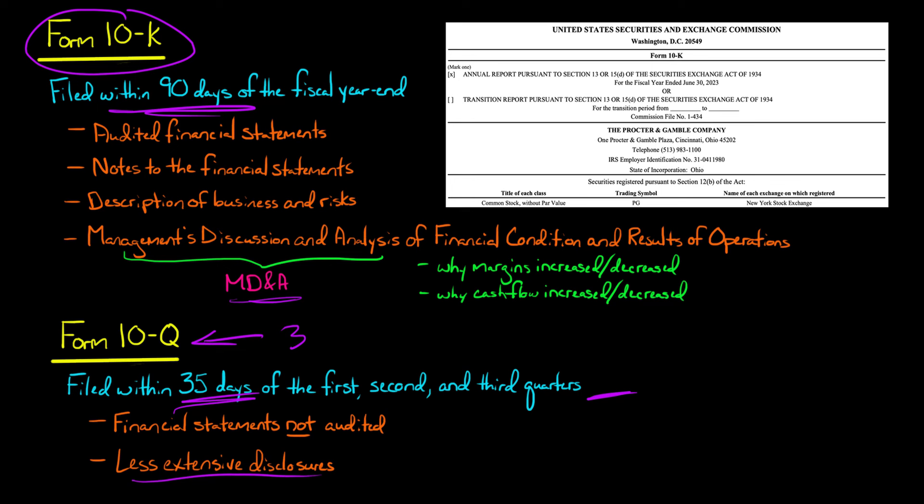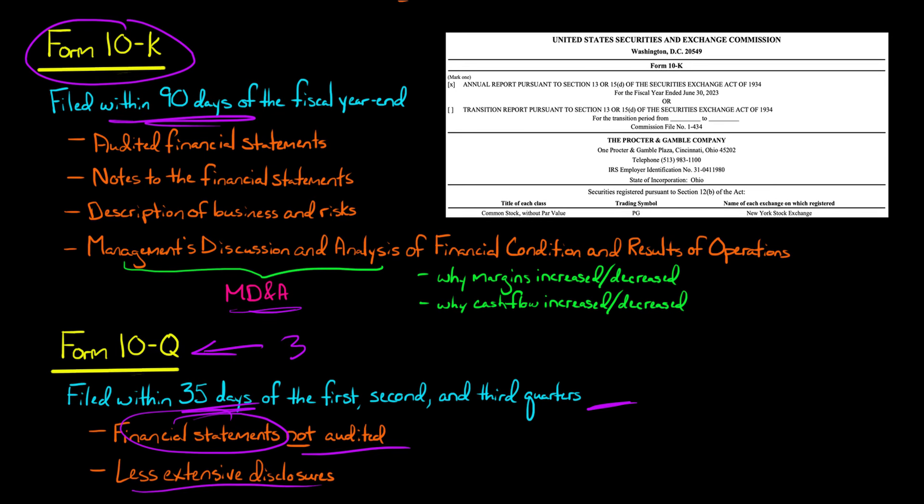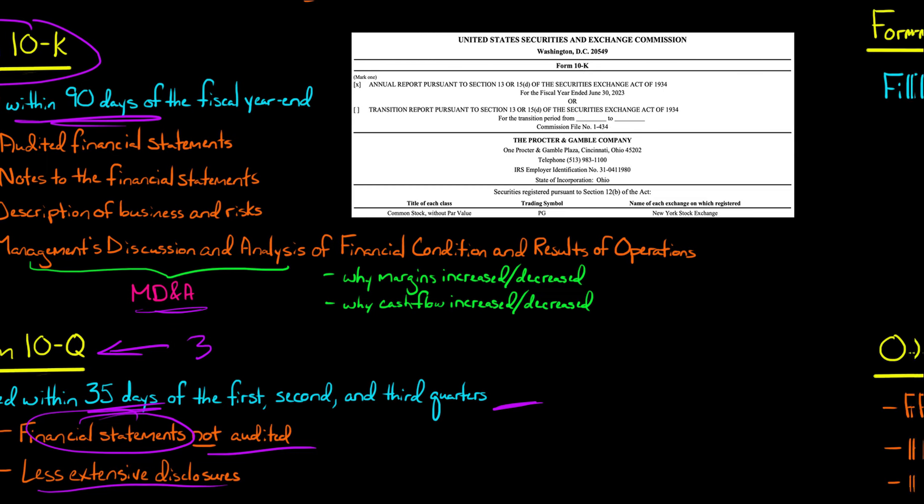In the 10-Q, the 10-Q has less extensive disclosures than the 10-K. It's not as long generally as the 10-K, it doesn't have as much information. It will have financial statements, however the financial statements are not audited in the 10-Q. So you've got audited financial statements in the 10-K, the 10-Q has unaudited financial statements, but it will have financial statements.